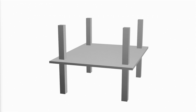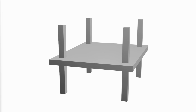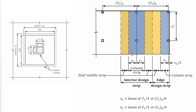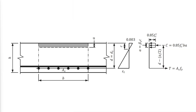In the previous video, we discussed how to initially choose a slab thickness to satisfy the serviceability requirements of two-way slabs. We also showed how to use the direct design method to find the shear and bending moments in the column and middle strips as well as the critical sections. In this video, we will show how to calculate the nominal strengths, calculate the required reinforcements for shear and flexure, and how to detail the reinforcements.